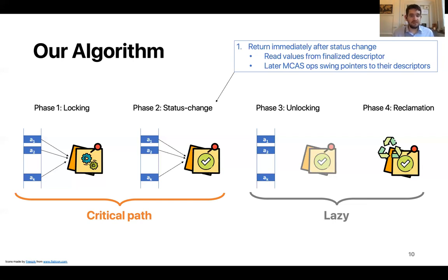Now for MCAS, for an MCAS operation that encounters this configuration, let's consider an MCAS that is concerned with A1. So MCAS will see that A1 contains a pointer to a finalized descriptor and can swing the pointer directly to point to the new descriptor.